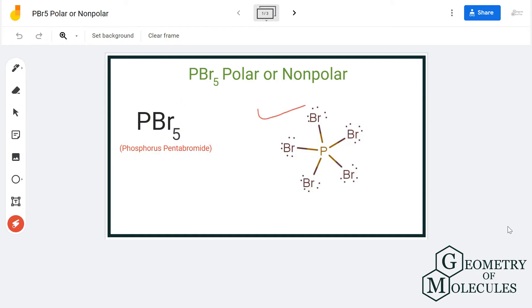we will first look at its Lewis structure followed by its shape. So here is the Lewis structure of PBr5, in which all bromine atoms are arranged symmetrically around a phosphorus atom. To further confirm its polarity, we will